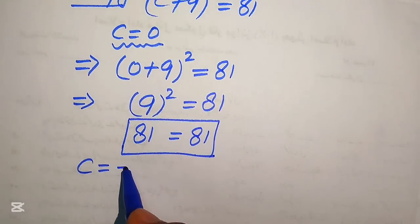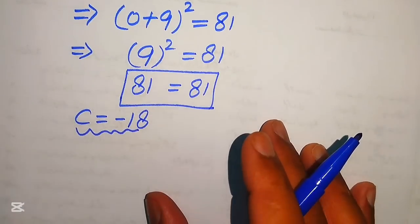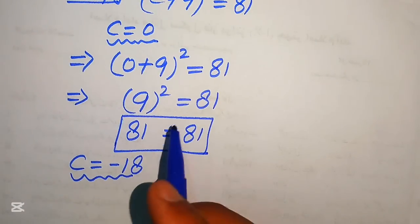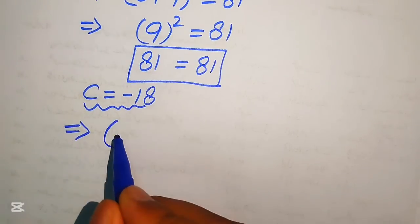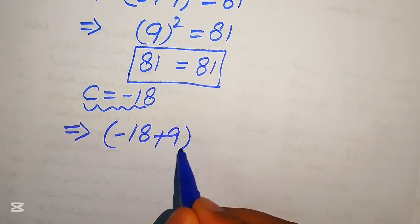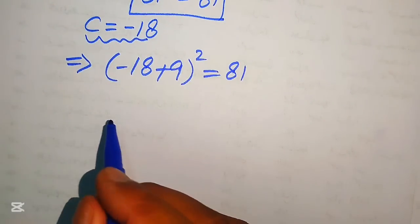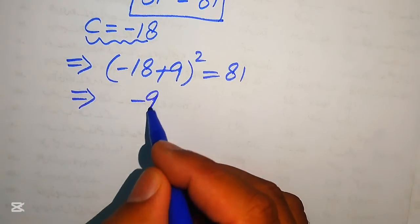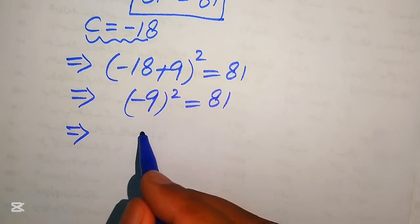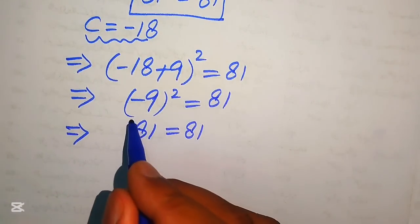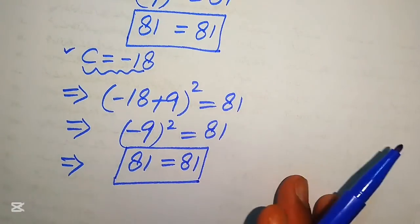Now we check for c equals minus 18. Substituting into the equation: (−18 + 9)² equals (−9)² equals 81, which equals 81. This confirms that c equals minus 18 also satisfies the given equation. These are the final verified answers.